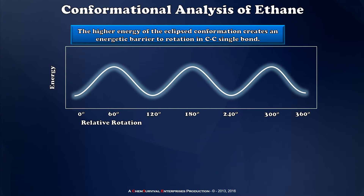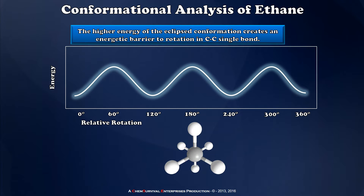The conformational energy diagram for ethane looks something like this, with an energy axis on the vertical and relative rotation plotted as my independent variable. When I look at a molecule of ethane down the carbon-carbon bond like this, I can clearly see why we have local minima and maxima.